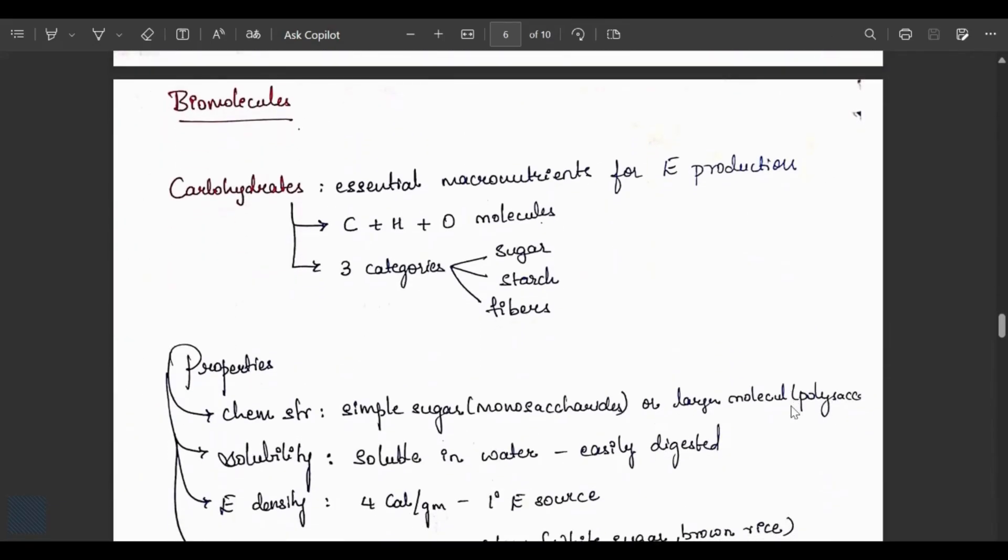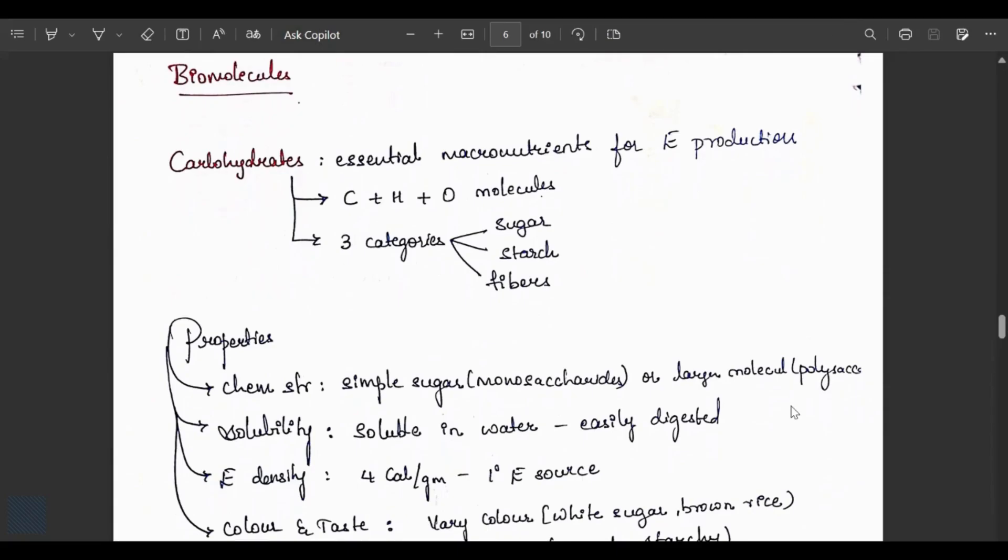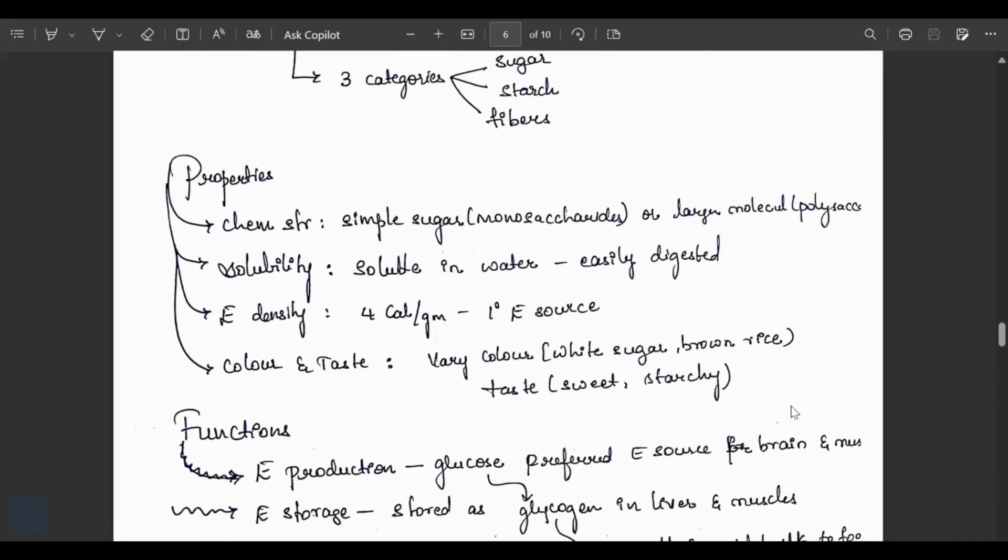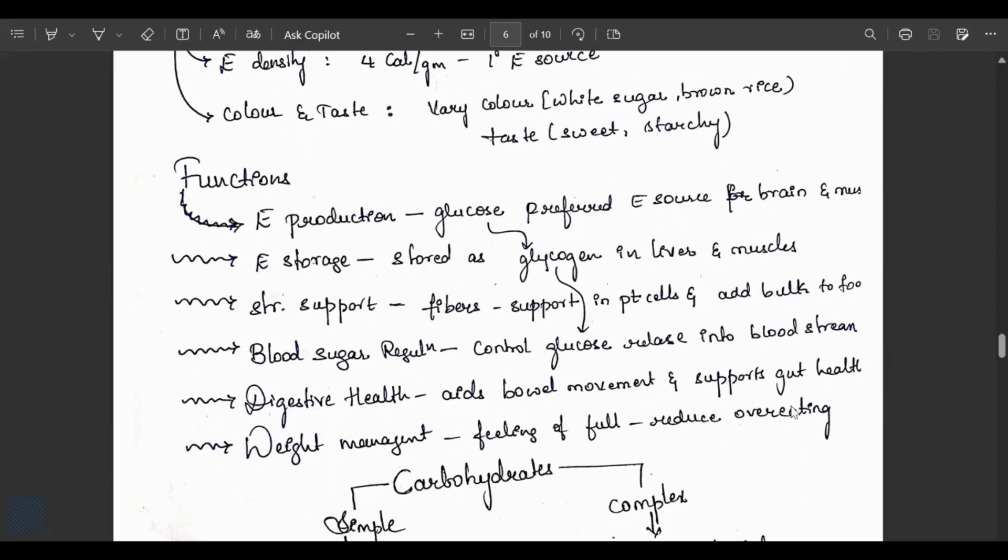Biomolecules. First, carbohydrates: essential macronutrient for energy production. Carbon plus hydrogen plus oxygen molecules form carbohydrates. Three categories: sugars, starch and fibers. Properties: chemical structure is simple sugars, monosaccharides, or large molecules, polysaccharides. Solubility: soluble in water and easily digested. Energy density is four calories per gram, primary energy source for our body. Color and taste vary - white sugar, brown rice - sweet taste.